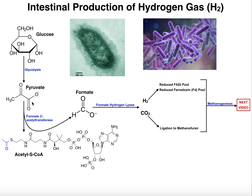The pyruvate generated by glycolysis can do a number of things depending on the organism or cell type. It can be transaminated to make alanine, an amino acid. It can be reduced into lactate in times of anaerobic stress or fermentation. It can be shunted into the mitochondria if it's a eukaryotic cell, where it undergoes an oxidative decarboxylation catalyzed by the pyruvate dehydrogenase complex, giving you acetyl-CoA.